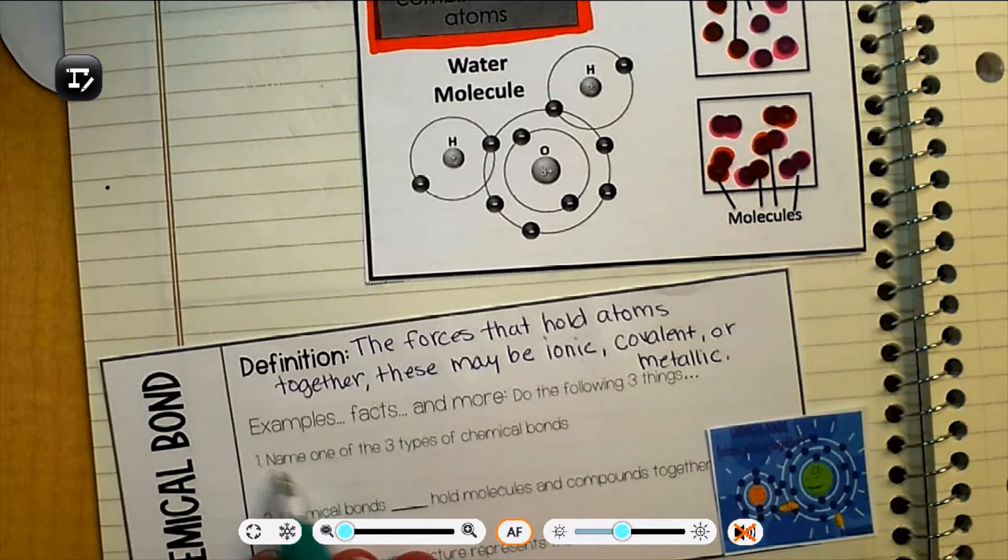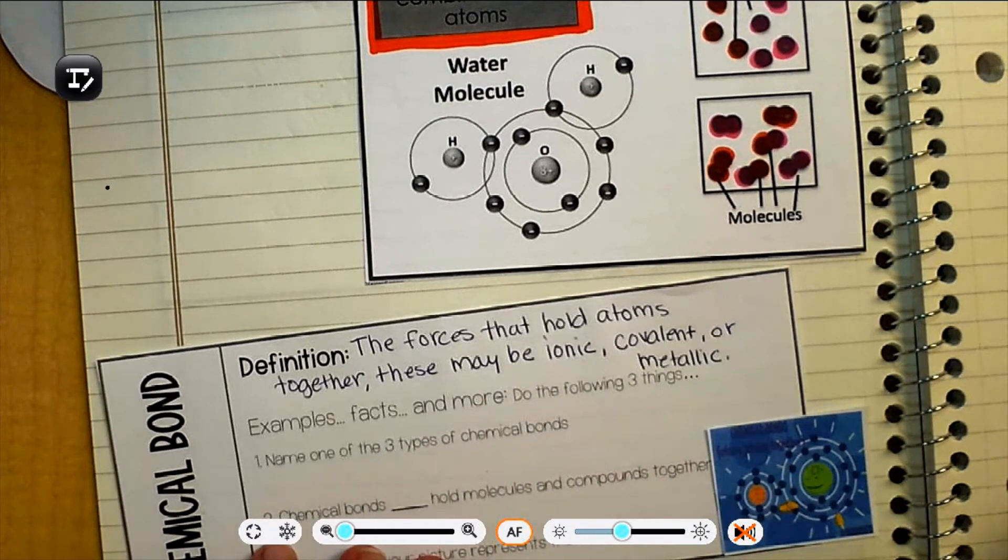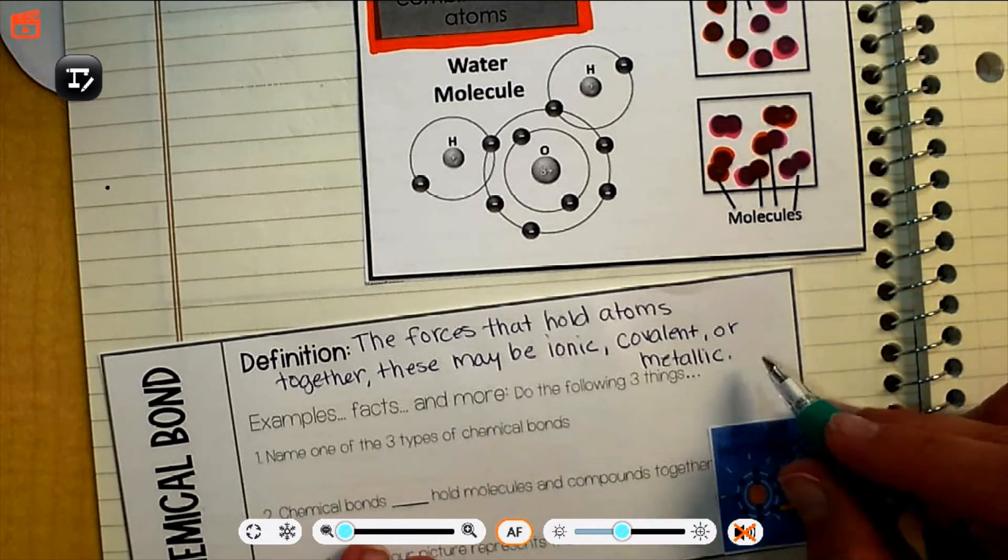So our first question, name one of the three types of chemical bonds. I just told you there's three types. You pick one. Put it there. I'm not going to write them down. You pick one. And write it there.